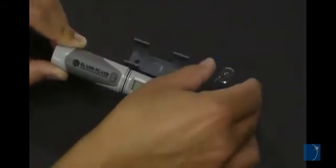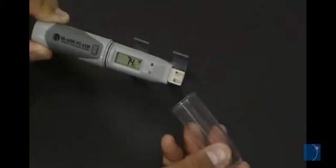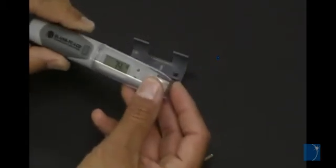ELUSB loggers include a plastic cap to protect the USB connector. A rubber gasket helps keep out dust and moisture.